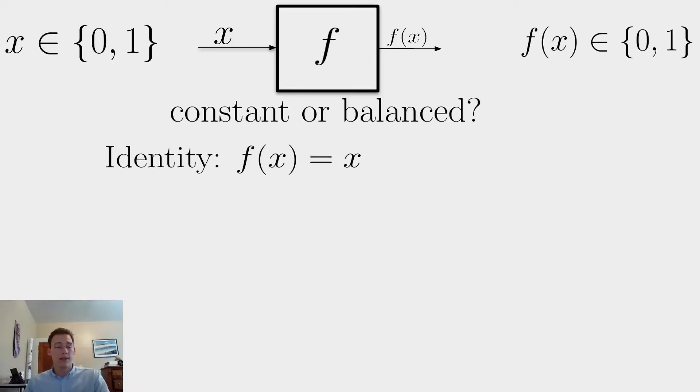f could be the identity function, that is that f just returns x. So if we put in a zero, we get a zero. We put in a one, we get a one. It could also be the negation operation, just like a NOT gate, which takes a zero to a one and a one to a zero. And these are going to form our two possible balanced functions.